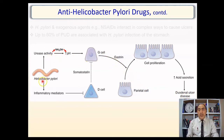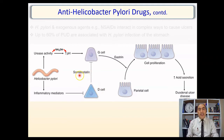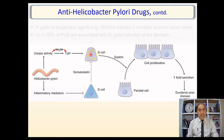H. pylori also induces inflammatory mediators that inhibit D cells. D cells produce somatostatin — a mnemonic: 'D produces somatostatin.' Somatostatin normally inhibits gastrin production from G cells. By inhibiting D cells, H. pylori removes this brake, so no somatostatin is produced, gastrin is no longer inhibited, and more gastrin is produced. Combined with ammonium hydroxide increasing pH and activating G cells, this greatly enhances HCl secretion and duodenal ulcer formation.